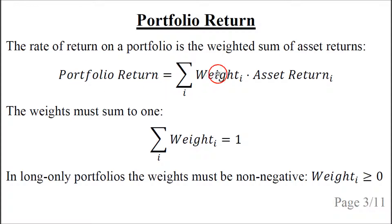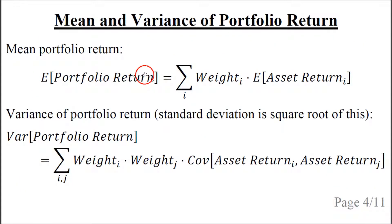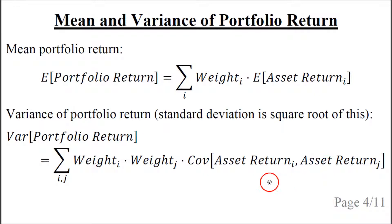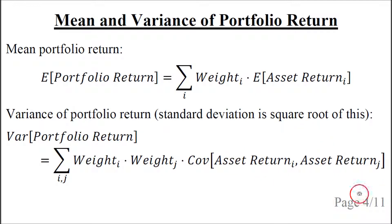The rate of return on a portfolio is the weighted sum of the asset returns. The weights must sum to 1, and if we have a long-only portfolio then the weights must be non-negative. If we can short sell, then the weights can be negative as well. The mean of the portfolio rate of return is the weighted sum of the mean asset returns. The variance of the portfolio return is the sum over indices i and j of the weight of one asset times the weight of another asset multiplied by the covariance of those two asset returns. The covariance measures how much the asset returns change together — it is positive if they tend to increase together, negative if one increases while the other decreases, and zero if there is no correlation between the two asset returns.